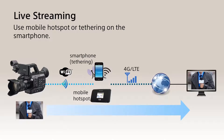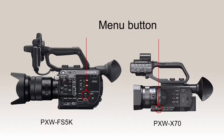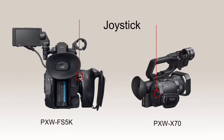Let's start with live streaming configuration. This graphic shows how to set up the network connection to stream live images. The PXW-FS5 can use Wi-Fi to connect with smartphones or mobile hotspots which have 4G LTE service. Press the menu button located on the side of the camera and use the multi-function scroll wheel or the joystick located at the rear of the camera's handgrip to navigate down to Network Set.